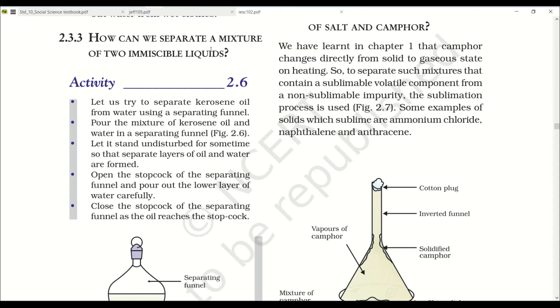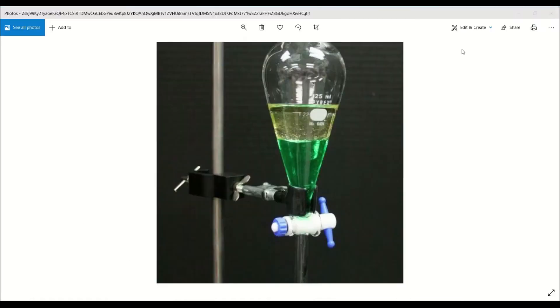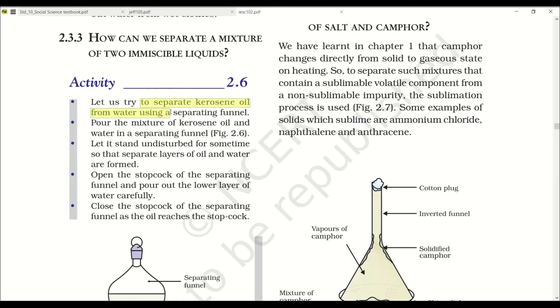How can we separate a mixture of two immiscible liquids? Immiscible liquids means liquids that do not mix with each other, just like oil and water, petrol and water. For these immiscible liquids we need to use an apparatus called separating funnel.